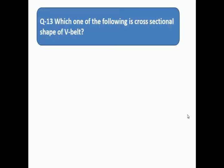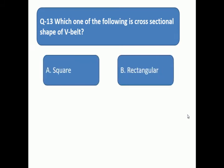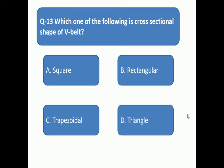Question number 13: Which one of the following is cross-sectional shape of V-belt? V-belt's cross-sectional shape is what? A: square, B: rectangular, C: trapezoidal, D: triangle.